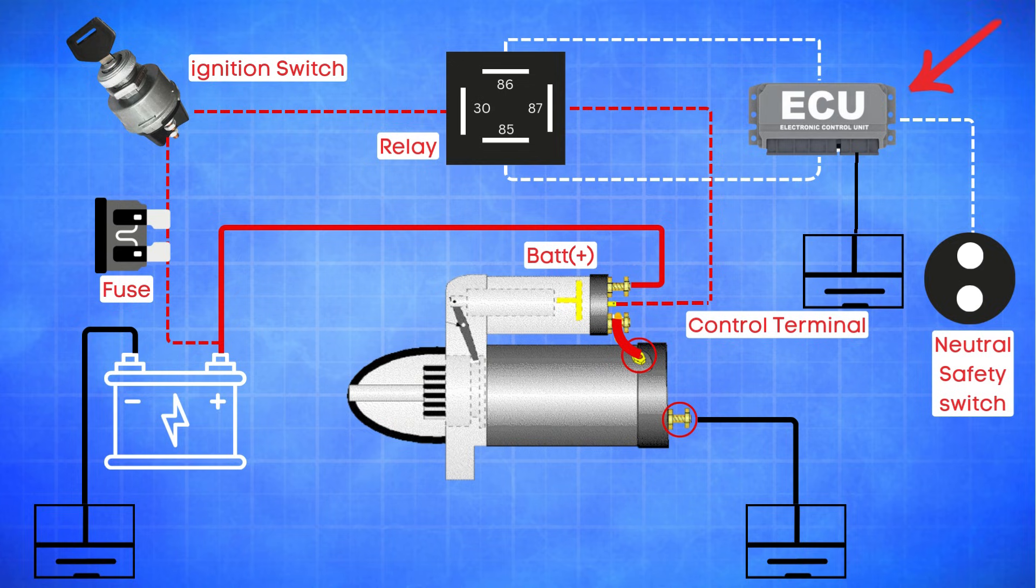The ECU carefully monitors signals from other components, like the neutral safety switch and other vital sensors or safety checks. If the ECU determines all conditions are met, it grounds the relay coil. This activates the relay, allowing power to flow from the battery to the starter solenoid, and ultimately to the starter motor itself.